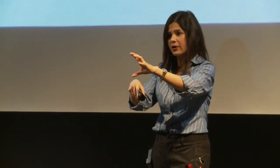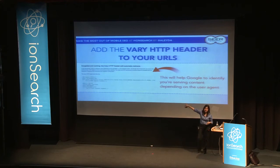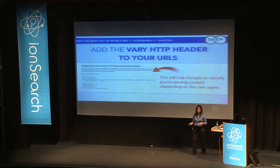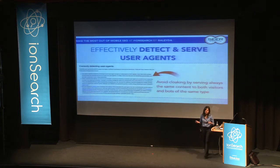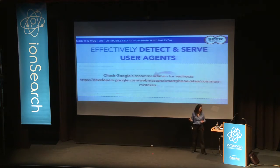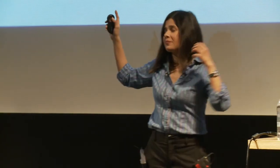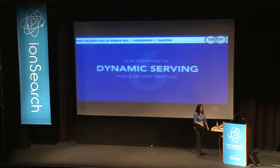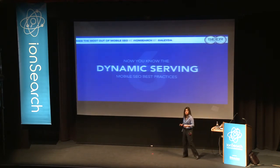The best practice to inform Googlebot that you're delivering different HTML through the same URL based on user agent is to add the Vary: User-Agent header in your HTTP headers. Effectively detect and serve the correct user agents — this is the key to avoiding cloaking and indexing errors. Check Google's best practices on this and share them with your developers, as this approach is very sensitive to implement correctly.